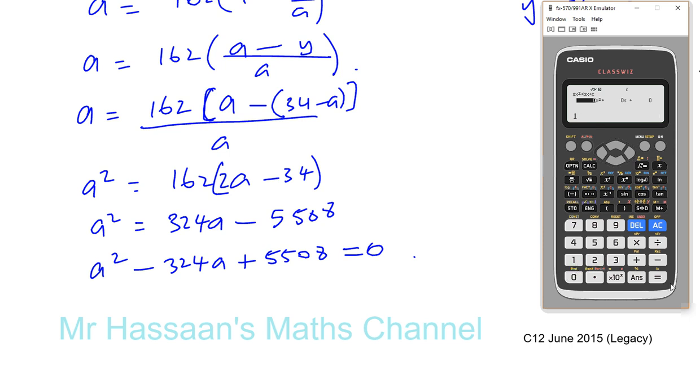So you're putting the coefficient of x squared, which is 1. And you press equals. Then negative 324, it's the coefficient of the x term. And then the constant, which is 5,508. You put all those values in. And then you press equals. It will give you one solution, which is 306.